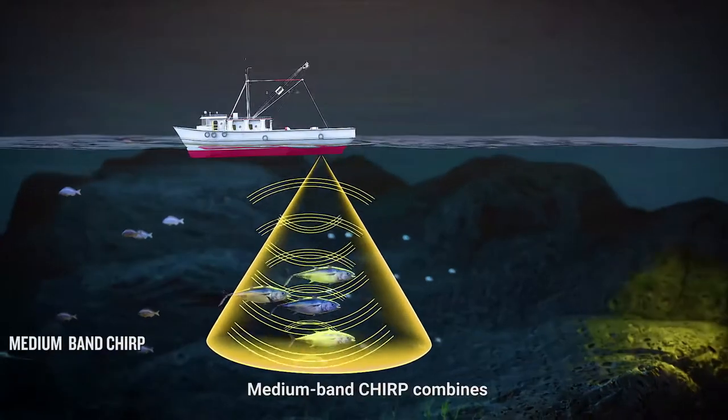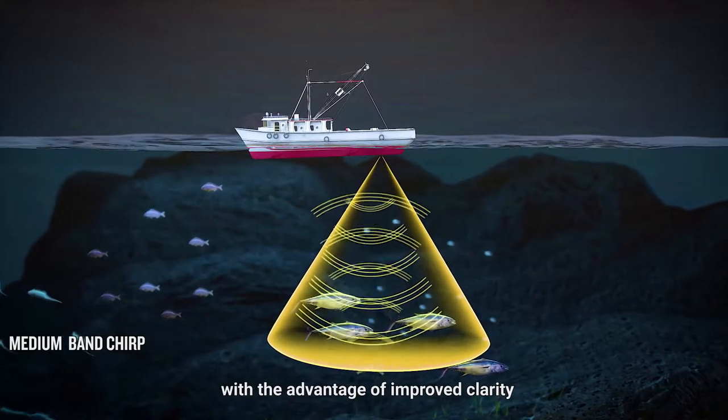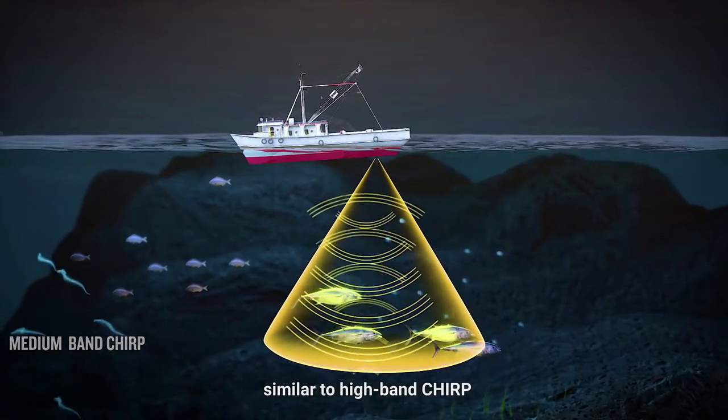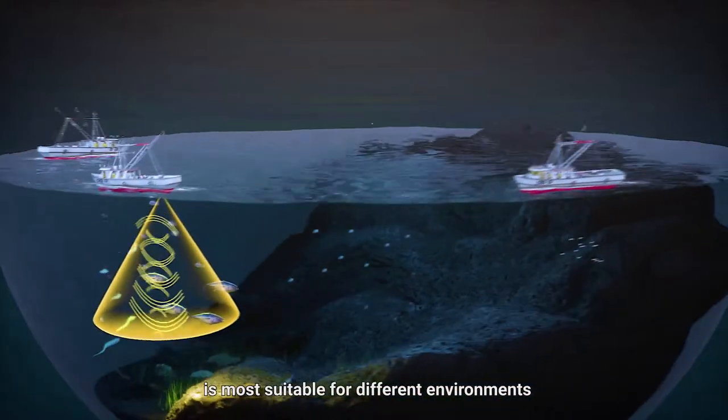Medium-band Chirp combines the greater penetration and breadth of low-band Chirp with the advantage of improved clarity, similar to high-band Chirp. Users can choose which frequency band is most suitable for different environments.